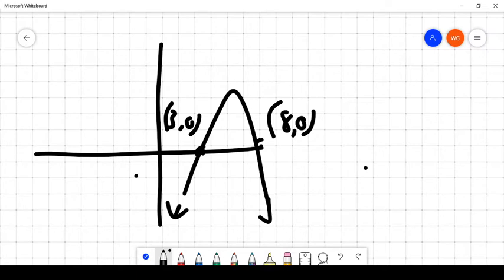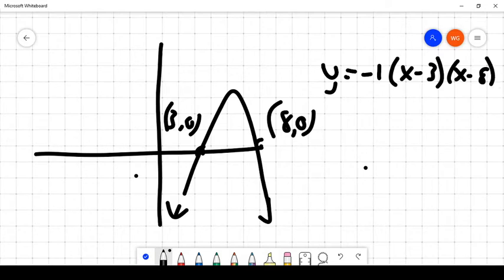And let's say that the equation that modeled this parabola would be y equals negative 1 times (x minus 3)(x minus 8). Now, if I was graphing this parabola and I wanted to know where the vertex was because I wanted to draw it properly,